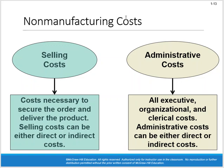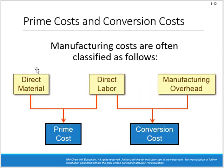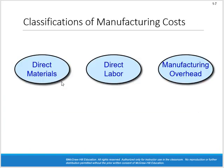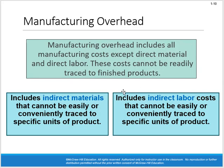Non-manufacturing costs like selling and admin are expensed in the period in which they're incurred. What about manufacturing costs? When we talk about manufacturing costs gathered in the MOH bucket, they are not expensed in the period incurred. Instead, we hold all those costs as an asset — rent, utilities, depreciation, property taxes, insurance, indirect materials, indirect labor — all treated as an asset, increasing assets on our balance sheet.